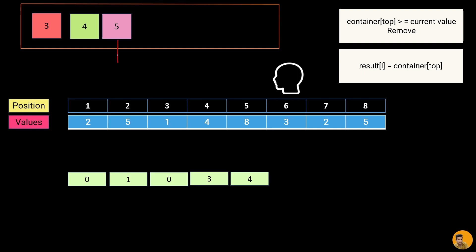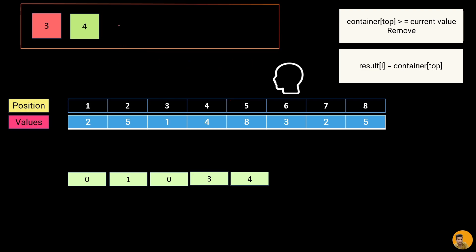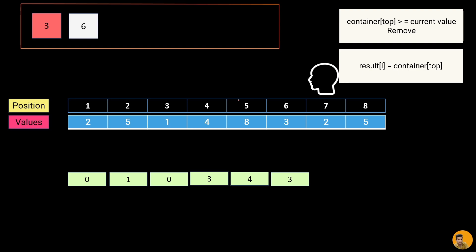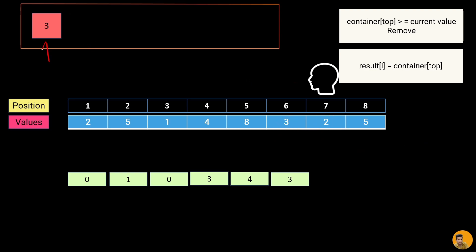Now we reach value three. Container top is position five (value eight). Eight is greater than or equal to three, so we remove it. Next, position four (value four) — four is greater than or equal to three, also removed. Now one is not greater than or equal to three, so we display position three. Moving to value two: container top is position six (value three) — three is greater than or equal to two, so remove. Next, position three (value one) — one is not greater than or equal to two, so we display position three.